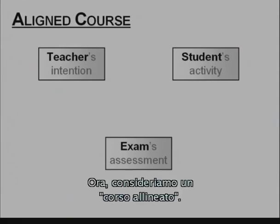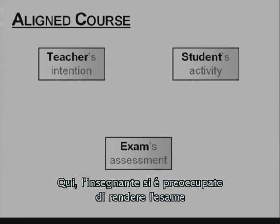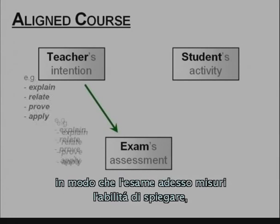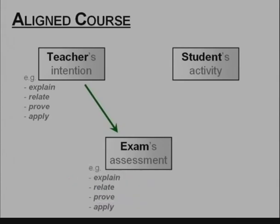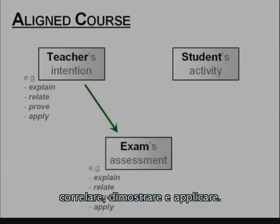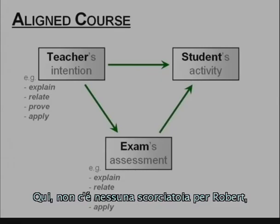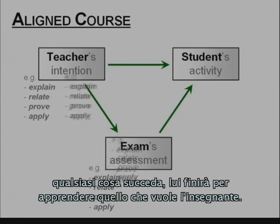Now let's have a look at an aligned course. Here the teacher has taken great care in making the exam explicitly conform to his intentions, so that the exam now measures the ability to explain, relate, prove, and apply. Here there is no shortcut for Robert. Whatever happens, he just ends up learning what the teacher is intending.